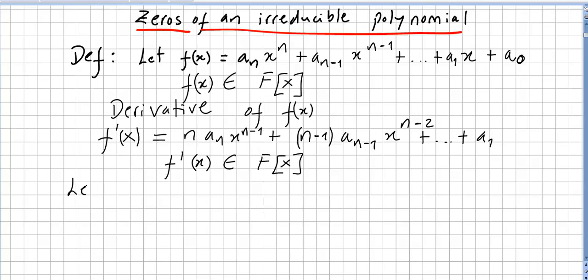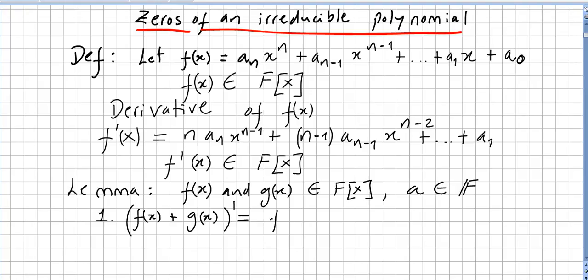I'm going to call this a lemma. I'm picking f(x) and g(x) in the ring of polynomials, and we pick a value a in the field, and the usual rules will be the same. What is the derivative of the sum? It will be the sum of derivatives.